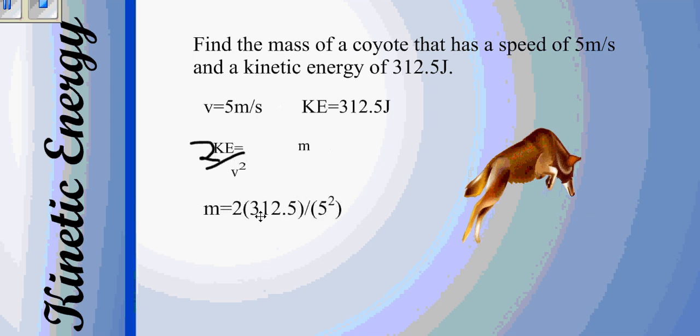Then we can plug it in. m is equal to 2 times 312.5 divided by 5 squared. Simplifying the math a little bit, we get 625 over 25, and a mass of 25 kilograms. So there we go. That's kinetic energy, and three different kinetic energy problems that you could have.